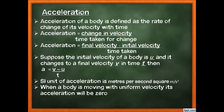The formula is: a = (v − u) / t, where v is final velocity, u is initial velocity, and t is time. The unit of velocity is m/s, and time is in seconds, so the unit of acceleration is m/s divided by s, which gives metres per second squared (m/s²). The SI unit of acceleration is m/s².